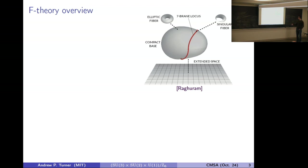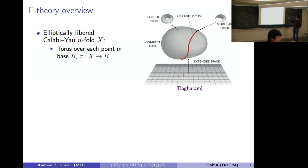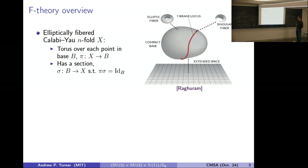Here's a picture: we have our compactification space as the compact base, with the non-compact dimensions below. We put an elliptic fiber over each point in the compact base, giving us an elliptically-fibered Calabi-Yau manifold. The Calabi-Yau condition is needed to preserve supersymmetry — it applies to the total space of the fibration, not the compactification space. Because each torus has a marked point forming an elliptic fiber, those marked points together form a section of the fibration, making it an elliptic fibration rather than just a genus-one fibration.